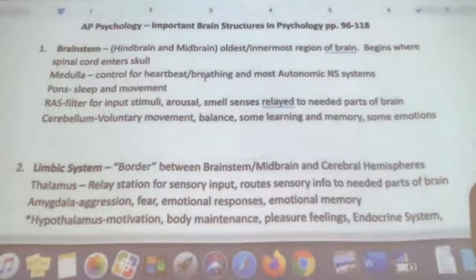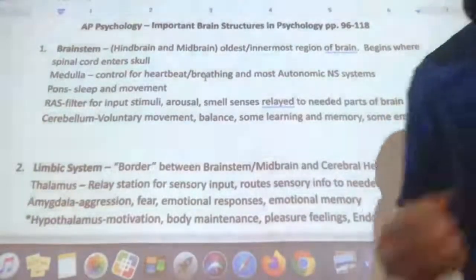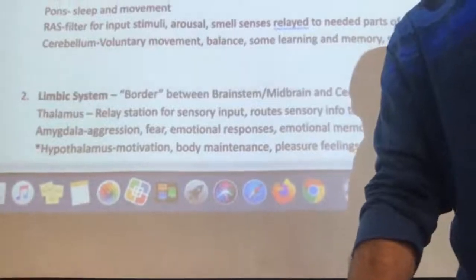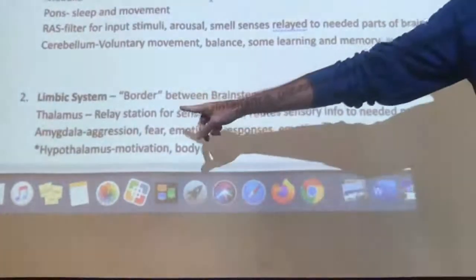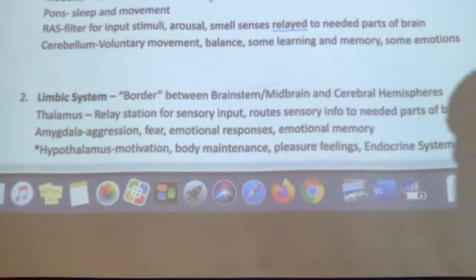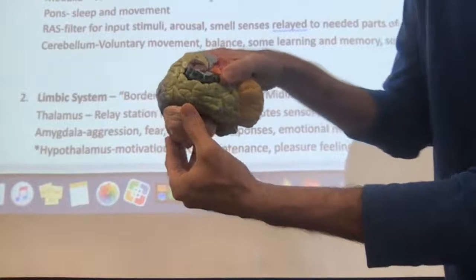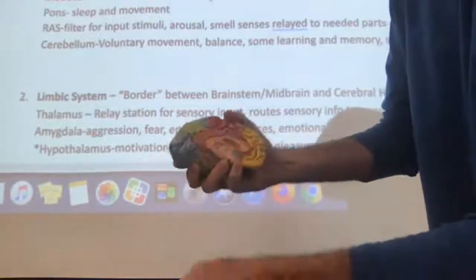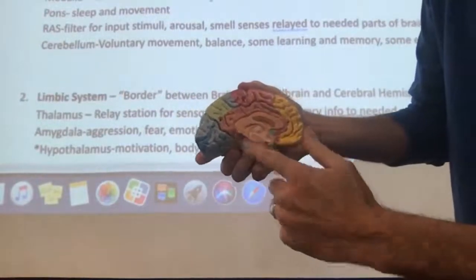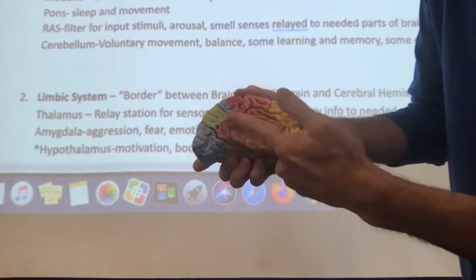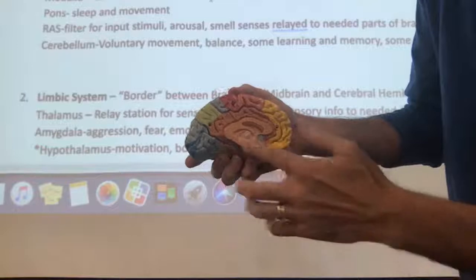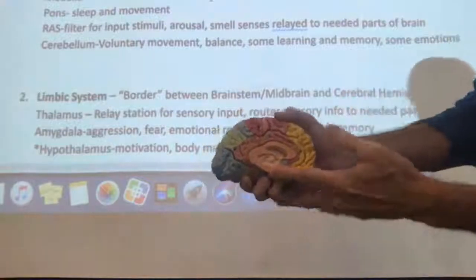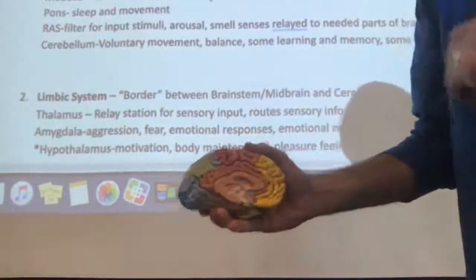So that's area number one — the brainstem — the oldest, innermost region of our brain that connects the brain to the spinal cord. Number two is what they call the limbic system. 'Limbic' literally means border. The brainstem and cerebellum sit below, and the limbic system borders the midbrain and brainstem on one side and the cerebral hemispheres on the other. It is the innermost center of the brain, and there are four main structures here with a lot to do with psychology.